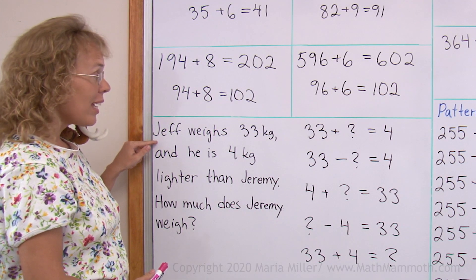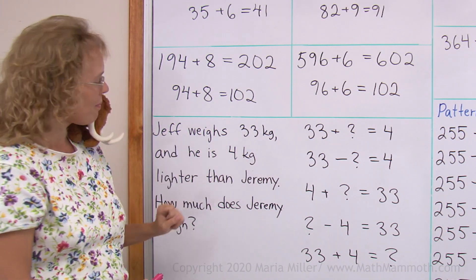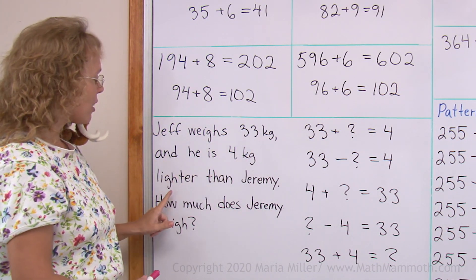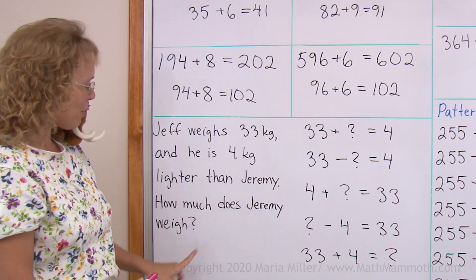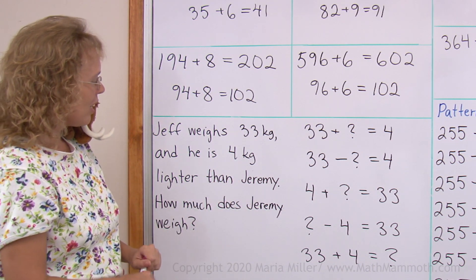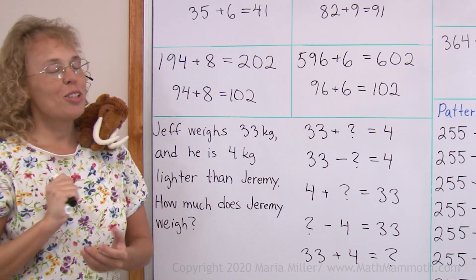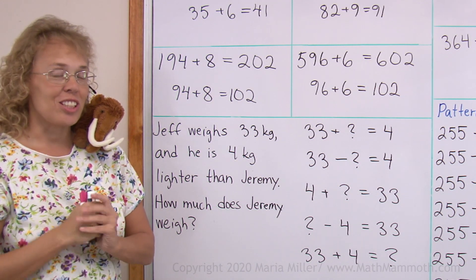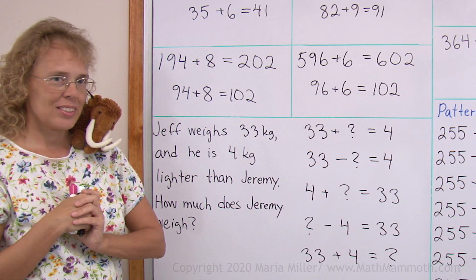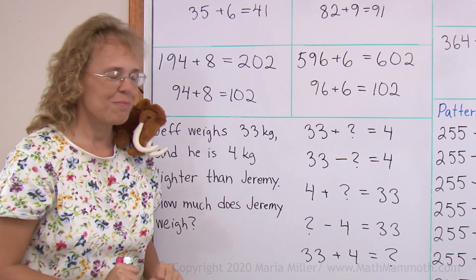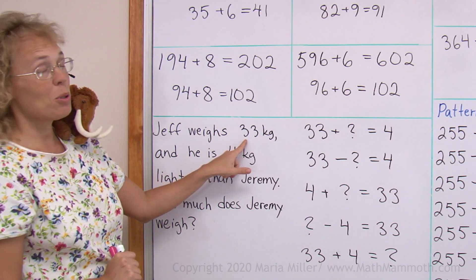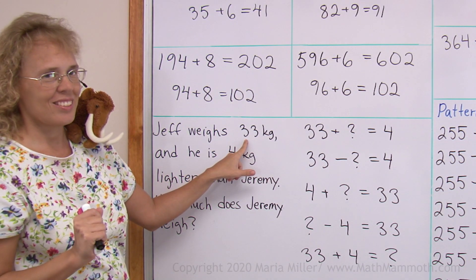Jeff weighs 33 kilograms and he's 4 kilograms lighter than Jeremy. How much does Jeremy weigh? Okay, my first question to you is who is heavier, Jeff or Jeremy? Jeff is lighter, right? So Jeremy is heavier. So Jeremy weighs more than 33 kilograms. We know that, right?